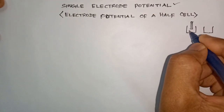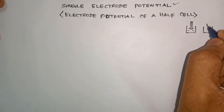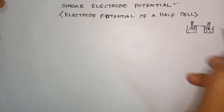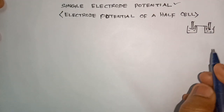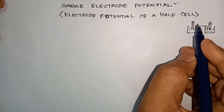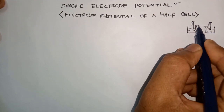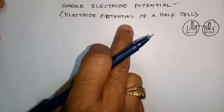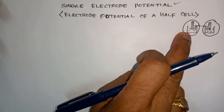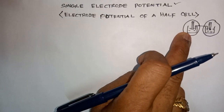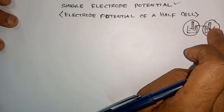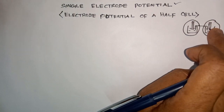Here we have an electrode dipped in its solution, and here we have another electrode dipped in its solution, and both these are connected through a salt bridge. Now we are going to talk about the electrode potential of each half cell — it is called the electrode potential of your half cell — and we want to find out its value. But the electrode potential of your half cell cannot be directly calculated; it has to be made as a complete cell by joining with some reference cell or a standard cell.